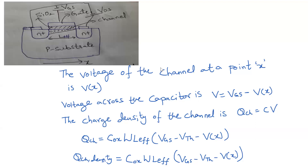The voltage across the channel varies at different points along X. We consider X = 0 at the beginning of the channel and X = L_effective at the end, so X varies from 0 to L_effective. The voltage at each point is different and equals the voltage across the capacitor. Let us assume the voltage at a point is V(x), a function of position X. So the voltage across the capacitor equals VGS minus V(x).